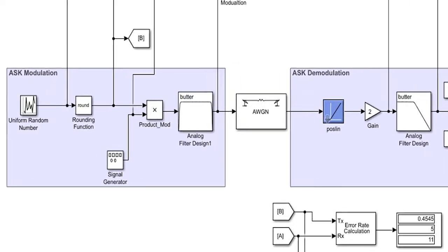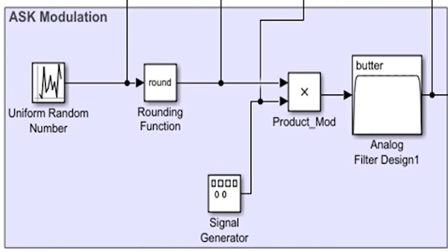Here we can see there is a uniform random number generator. It acts to generate random numbers between 0 and 1. And the rounding function is to round all values to the nearest one.